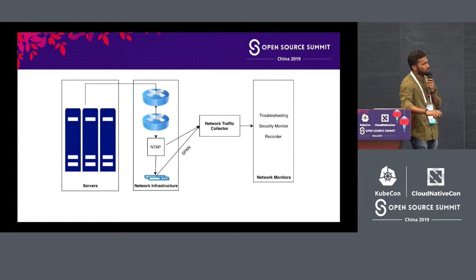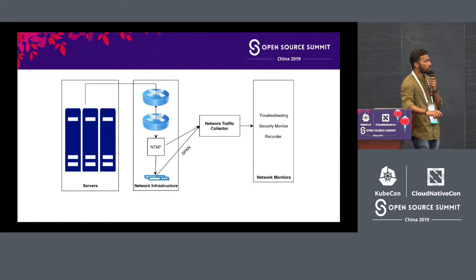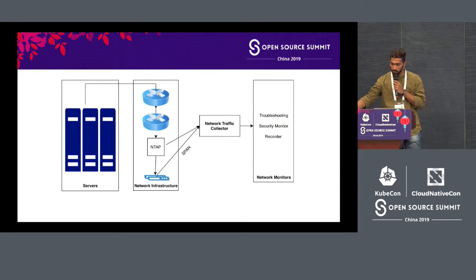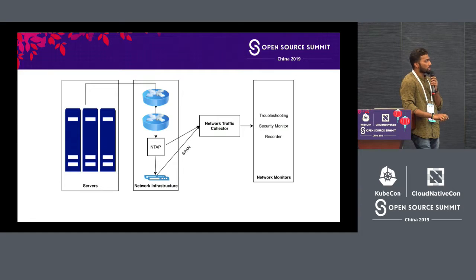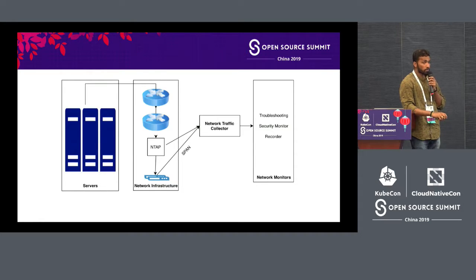The problem with NTPs is that they are hardware appliances and can be costlier depending on the cloud deployment. Another option is port mirroring using SPAN — Switched Port Analyzer — which can be configured per port, duplicating traffic from port A to port B. You decide which ports are monitored and send traffic to the network collector, then forward it to the monitors.